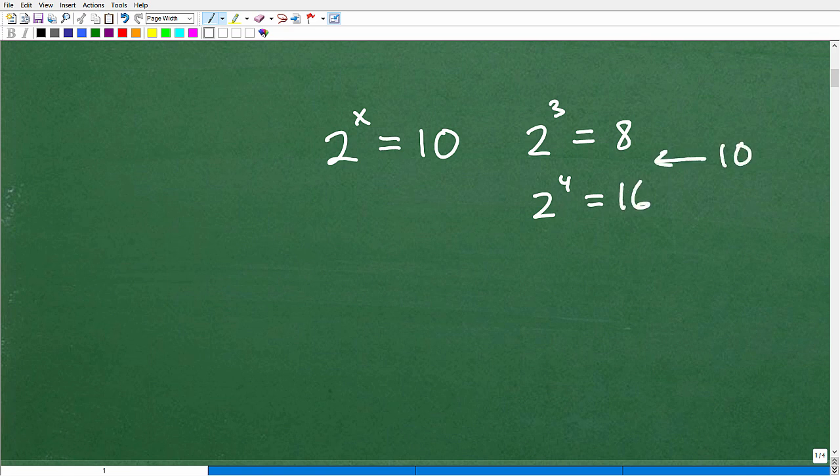And 10 is like right there, right? So 2 to the what? Well, it's going to be somewhere between 3 and 4, right? So like 2 to the 3.2 maybe is going to be equal to 10. So this type of problem now is not so easy to solve, right?